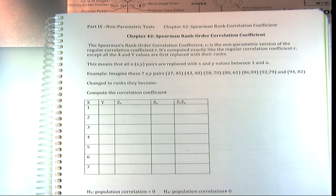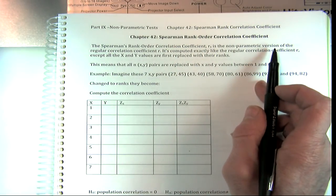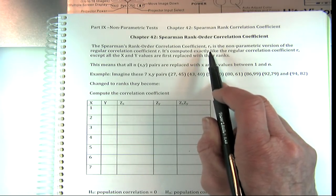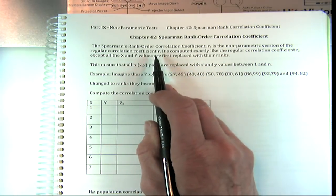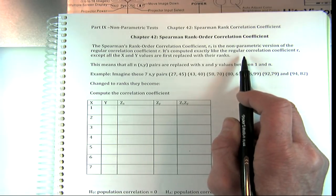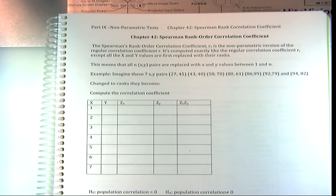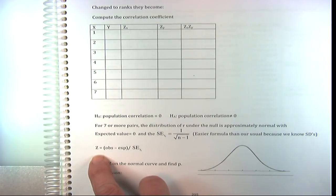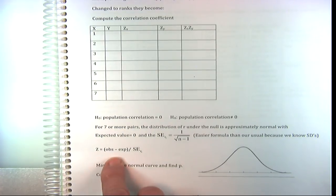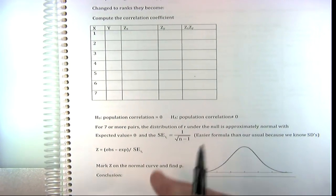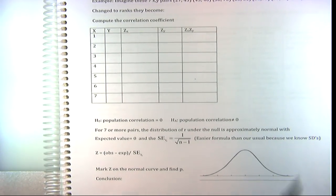So let's do the Spearman rank order correlation coefficient, abbreviated R_s instead of just R. It's the nonparametric version of the regular correlation coefficient R. It's computed exactly the same way, except all the X and Y values are first replaced with their ranks. If you have a set of 10 X-Y pairs, you replace them with the numbers 1 through 10 for both X and Y, then compute the correlation coefficient on those numbers.